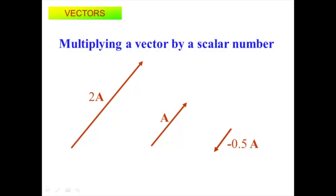If we multiply a vector by a scalar number — say velocity times 2 — this is straightforward. There's A; multiply it by 2 and it's twice as long. It doesn't change the direction, just changes magnitude. If I multiply by a negative number, I've reversed it. Negative 0.5 times A would shrink A by half and flip it around.